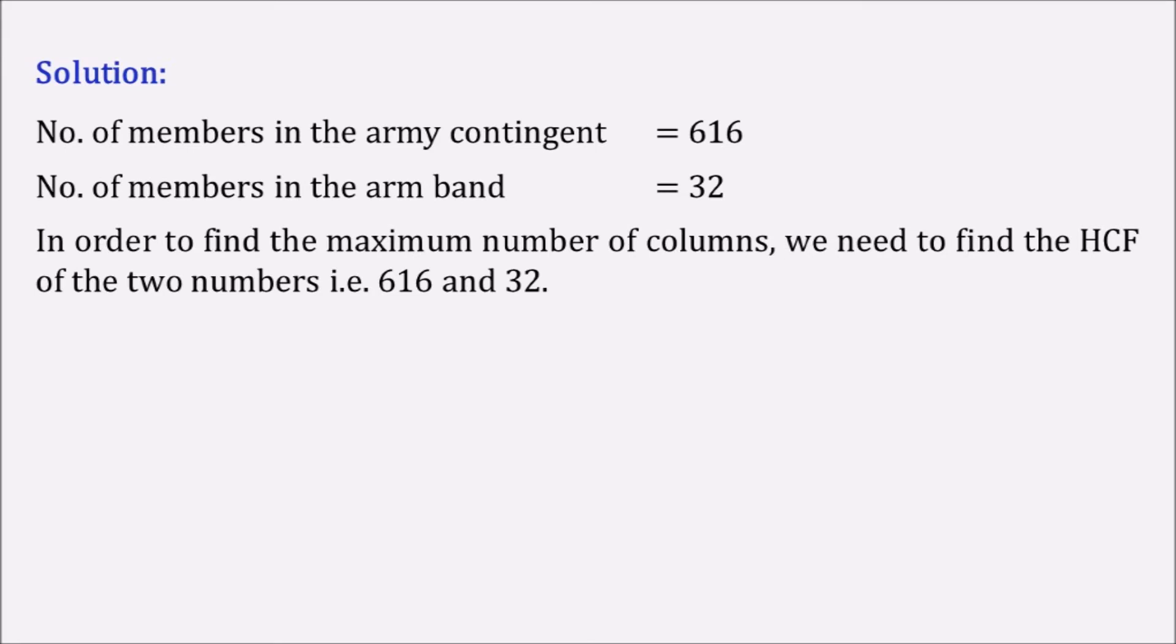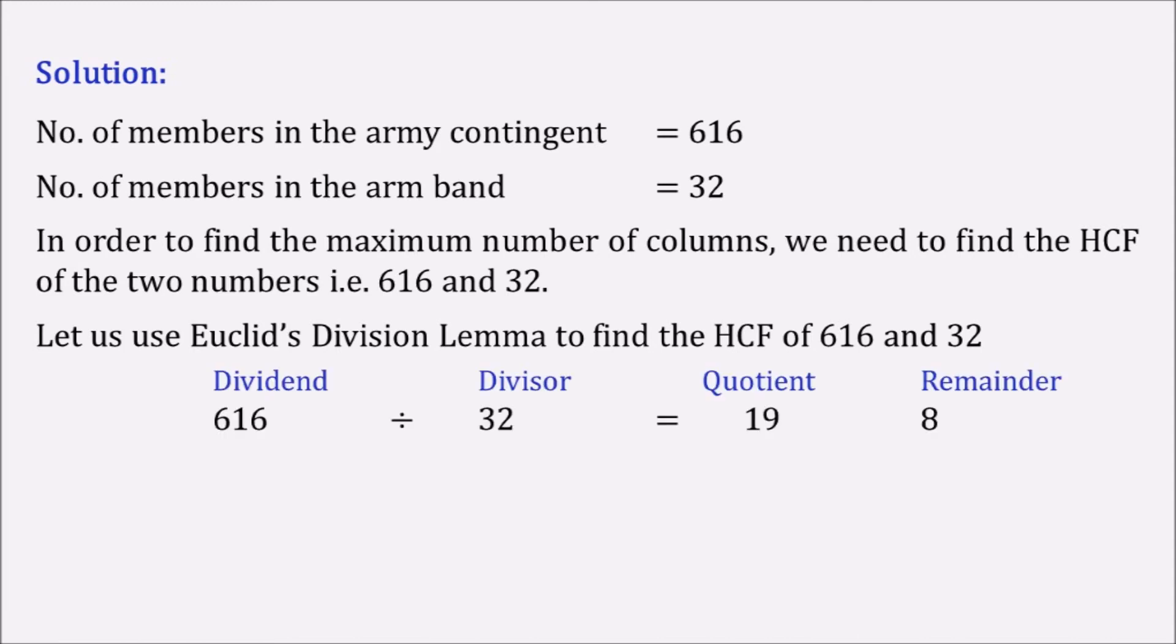And now coming to this particular chapter, again we are going to put Euclid's division lemma to find out the highest common factor. So let's see. Now as we know that 616, that out of 616 and 32, 616 is the bigger number or greater number. So we will divide 616 with 32 and we will continue this division till we get the remainder as 0.